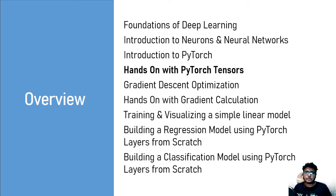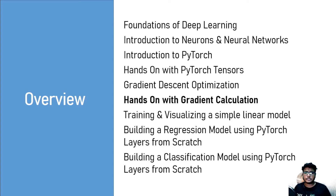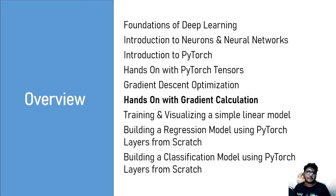Once we are done with the tensors knowledge, we are going to move to more deep learning concepts like how gradient descent optimization works. Then we are going to implement gradient descent optimization using the Autograd library, which is already available in PyTorch, and I'll show you how that library makes your life easier by calculating the gradients for you.